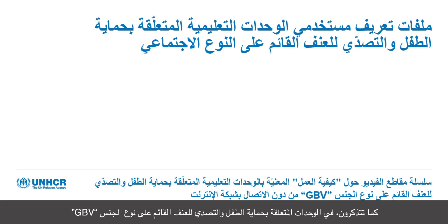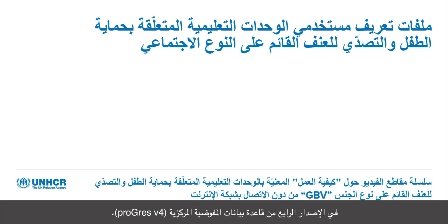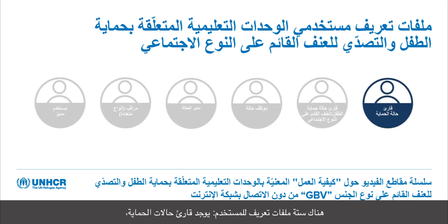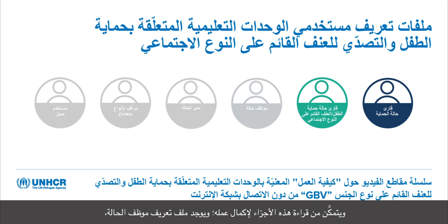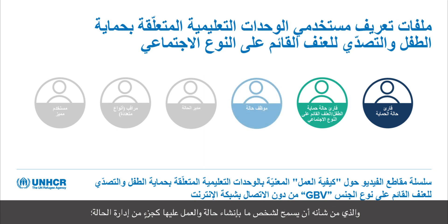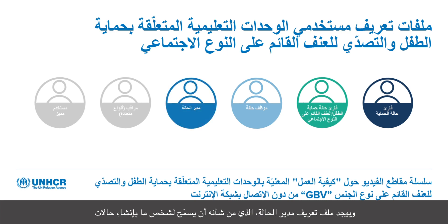As you will remember, in the Child Protection and GBV Modules of Progress V4, the user profiles are slightly different than those in the other modules found in Progress. There are six user profiles. There is the Protection Case Reader, which allows for minimal access just to be able to see whether a case exists. There is a Child Protection and GBV Case Reader, which allows someone to have parts of a case shared with them and be able to read those parts to complete their work. There is a Caseworker Profile, which allows someone to create and work on a case as part of case management.